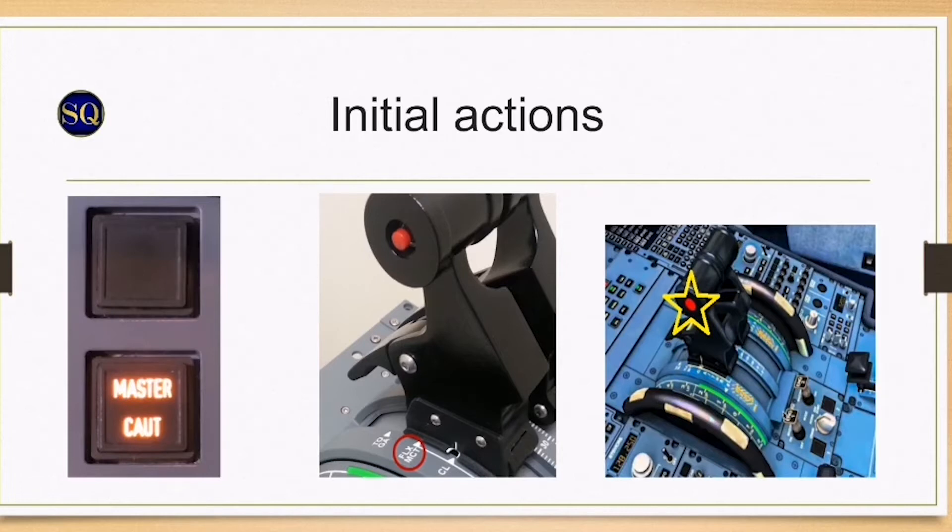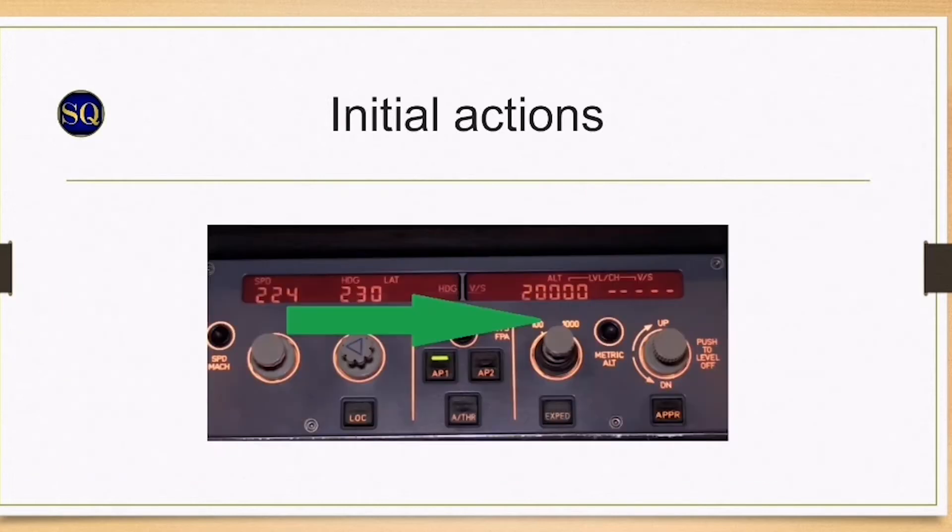The speed is now controlled by the elevators and the thrust is fixed at MCT. Select green dot and turn off the airway at 90 degrees or towards an alternate.